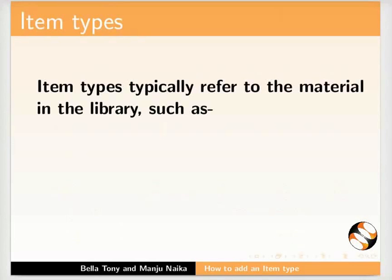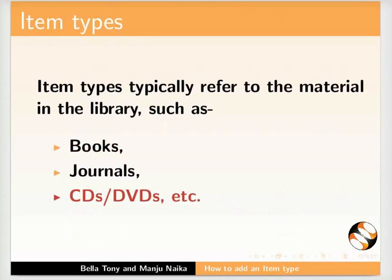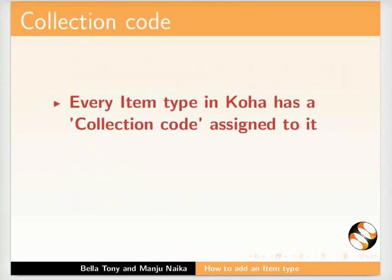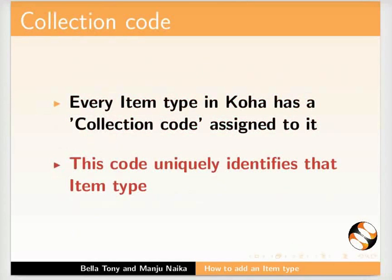Item types typically refer to the material in the library such as books, journals, CDs or DVDs etc. Every item type in Koha has a collection code assigned to it. This code uniquely identifies that item type.